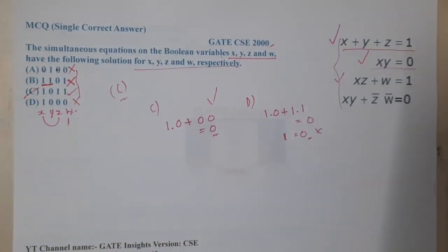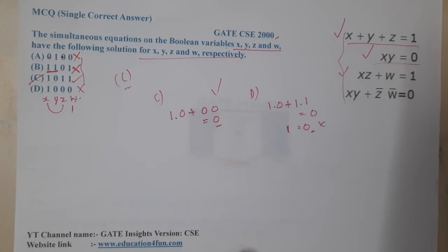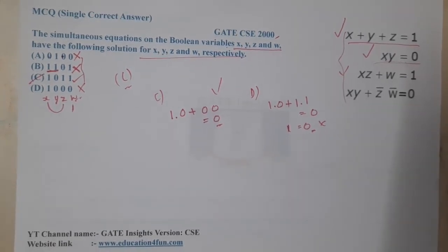With this simple understanding, you can say option C is the correct exact values which satisfy the given equations.